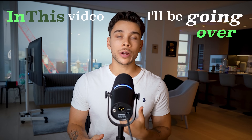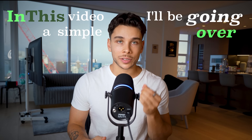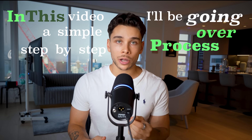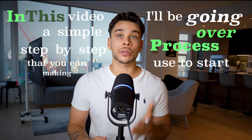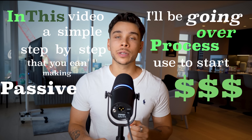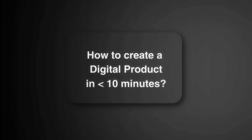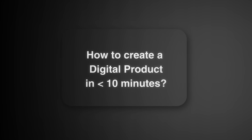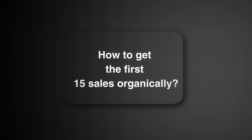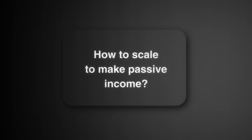In this video, I'll be going over a simple step-by-step process that you can use to start making passive income selling digital products. This process will work for you even if you're a complete beginner. We're going to cover how to create a ready-to-sell digital product in under 10 minutes, show you how to get at least your first 15 sales without paid marketing, and then cover how to scale it up so that you're making passive income.